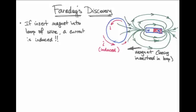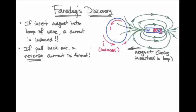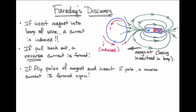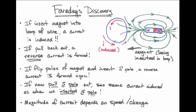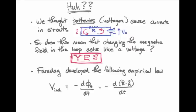For a north pole being shoved into the loop so that the field lines point into it, the current would be counterclockwise. If we pull that magnet back out, a reverse current is formed and the current would be clockwise. If we flip the poles and insert a south pole instead, again a reverse current is formed and the current would be clockwise. If we pull the south pole out, we would see a counterclockwise current, much like inserting a north pole. Faraday also discovered that the magnitude of this current depends on the speed of the change — how quickly we pull the magnet in and out of the coil.